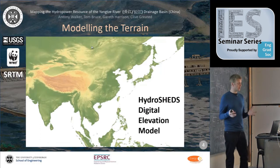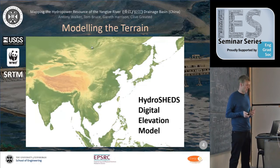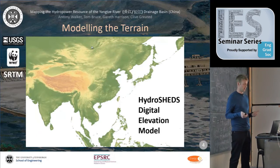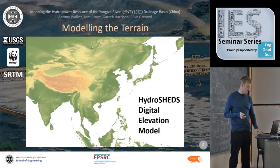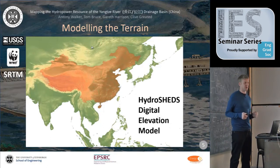For modeling the terrain we use a digital elevation model. There are many models available, both local and global. We've used a global, satellite-derived model called HydroSheds, which is attractive because it has been hydrologically conditioned — great for mapping hydrology. You can see a map of Asia, with China and the Yangtze drainage basin sitting within it.